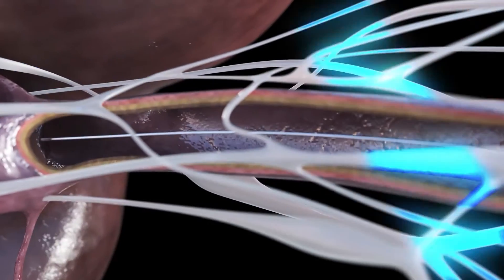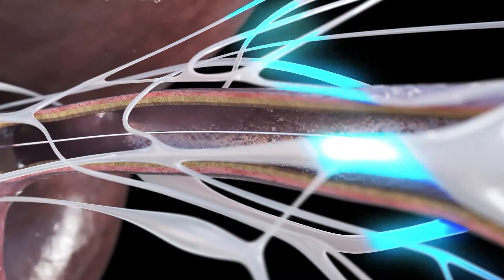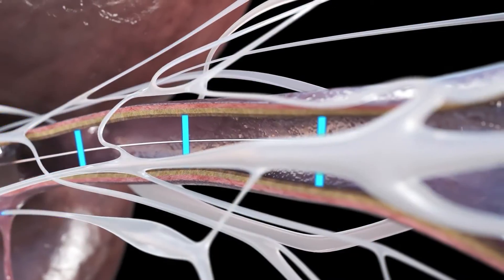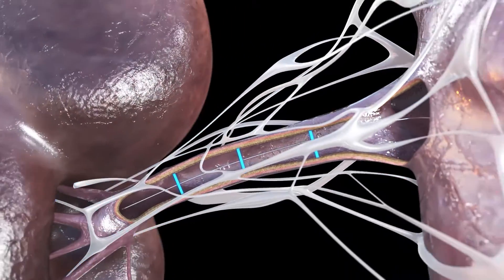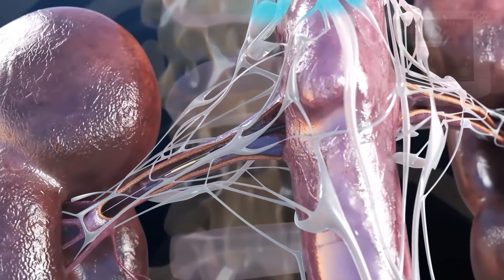Treatment in the distal branches is not necessary with the Paradise Ultrasound RDN system. Using renal angiography, the distal, mid, and proximal main artery diameters are measured to determine the appropriate Paradise catheter balloon size.